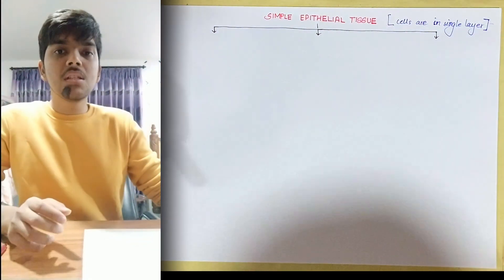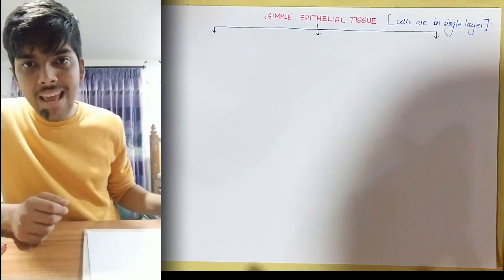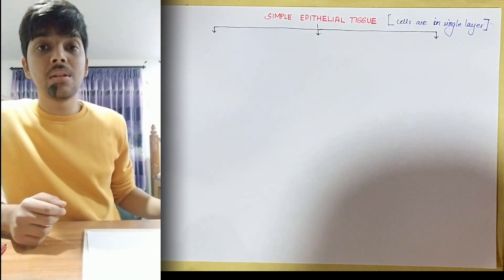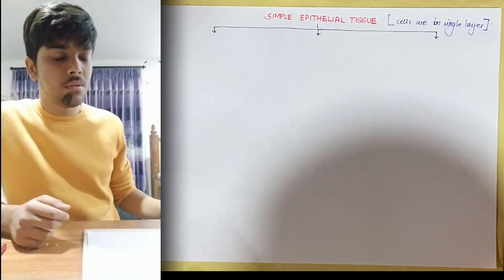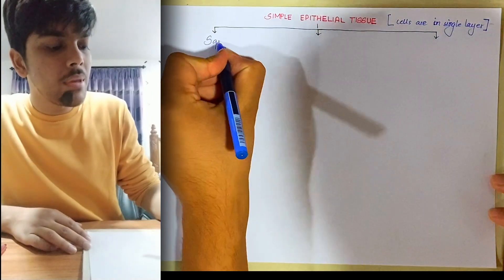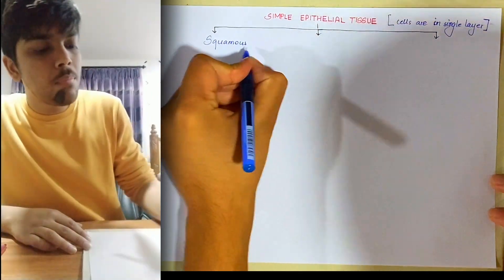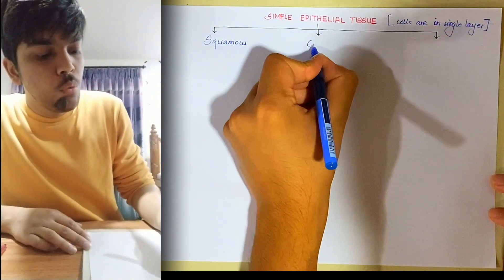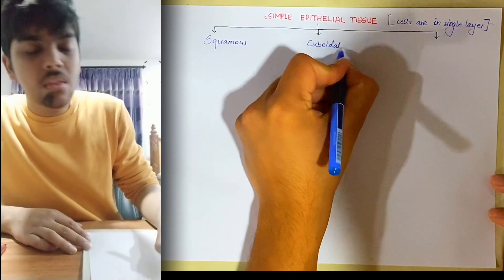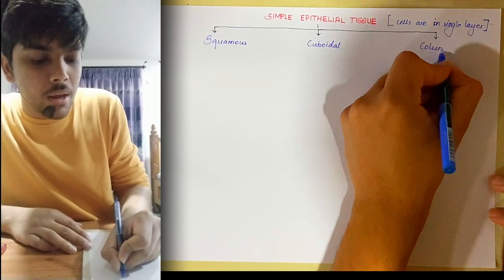Based on the type of cell present in the epithelium, simple epithelial tissue is of three types: first is simple squamous epithelium, second is simple cuboidal epithelium, and third is simple columnar epithelium.